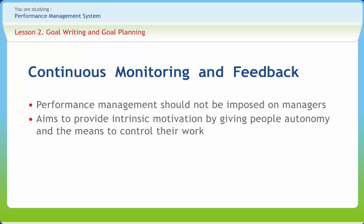The aim of continuous monitoring and feedback generation is to provide intrinsic motivation by giving people autonomy and the means to control their work. Of course, individuals' needs for job satisfaction, growth, security, recognition, and reward have to be understood and reconciled with the needs of the organization.